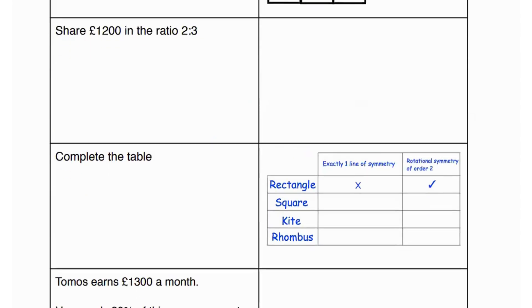Share £1200 in the ratio of 2 is to 3. So what we're going to do is create fractions for both the quantities in the ratio. For the first one it's going to be 2 over the sum of 2 and 3, and then we're going to multiply this fraction by the amount that we're going to share among these two quantities which is 1200.